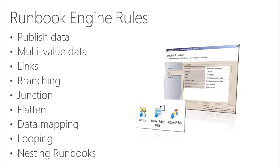Another concept is looping. If you want a process or activity to run several times — for example, checking whether a specific service is running on a remote server five times, every ten seconds — you use looping. You can define looping at the activity level or at the runbook level, and you can define exit and do-not-exit conditions based on number of attempts, specific published data, or a variable value.